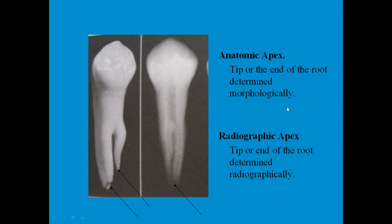Another important terminology is the anatomic apex versus the radiographic apex. The anatomic apex is the tip or end of the root as determined morphologically. In a radiograph, the tip of the tooth is called the radiographic apex. The difference is that morphologically you can appreciate two apices, whereas in a radiograph that is not apparent — it appears as a single apex.